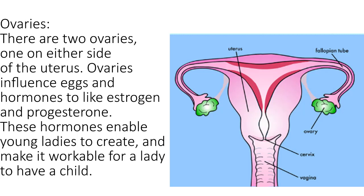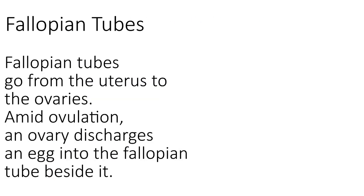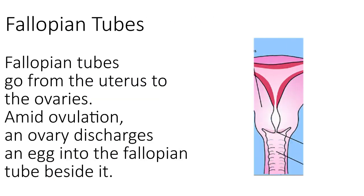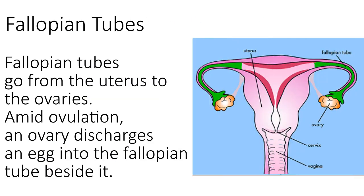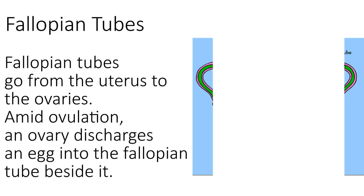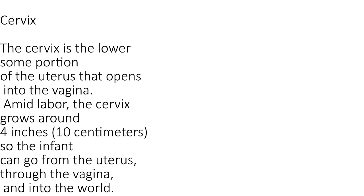Each egg is small, about one-tenth the size of a poppy seed. Fallopian tubes go from the uterus to the ovaries. During ovulation, an ovary discharges an egg into the fallopian tube beside it.